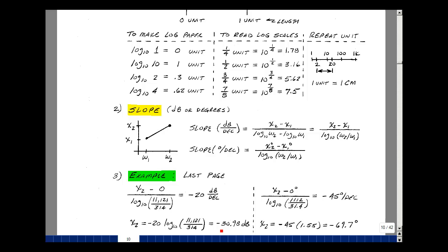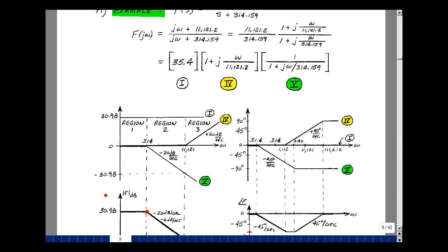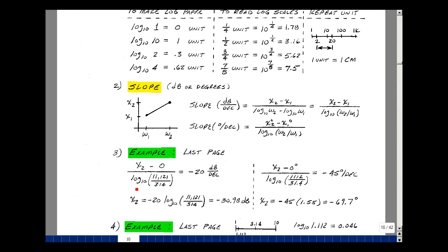On the last page, I marked off one of the results as minus 30.98. Let me do that particular example by just going back to the previous page. So let me call this x2, and I'll call this point x1. So (x2 - x1) divided by the log of (11121/314) is equal to a slope of minus 20 dB per decade. I know this is zero, but I don't know the value of this. On the following page, I just solve for that. So my rise over my run was the slope, and I just cross multiplied, solve for x2, and that turned out to be 30.98.